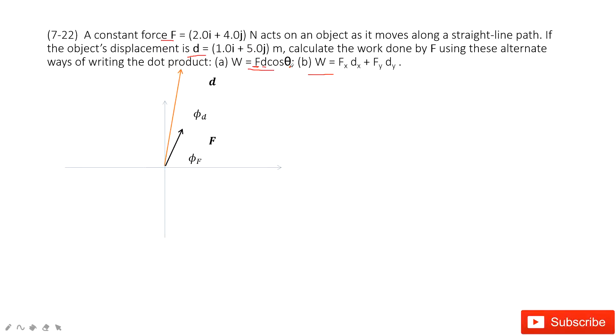Next one, how can we find angle theta? From this equation we can get the angle phi f, the angle f with the x-component. And then we can also get the angle phi d. This is the angle from d, this vector, with the x-component. And then phi d minus phi f becomes the angle theta.